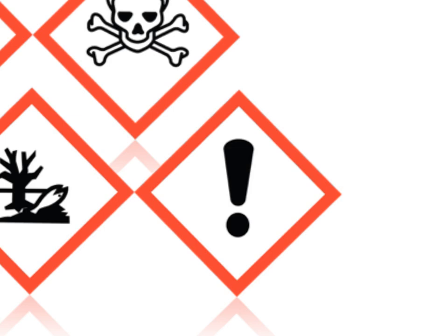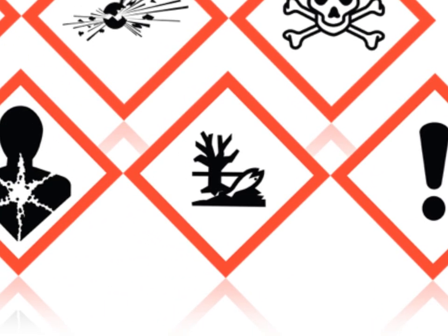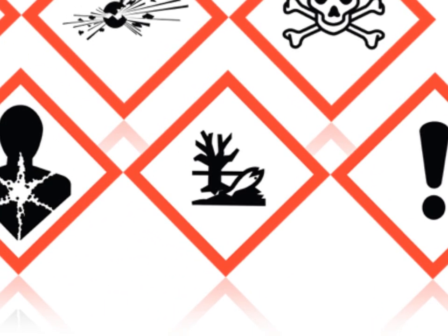When a chemical with this warning comes into contact with your skin, eye, or throat, it could cause you to have a rash, your eyes to water, or you to start coughing. The next label on the list appears to be a dead fish next to a tree. This symbol represents materials that damage the natural environment, particularly aquatic ecosystems.